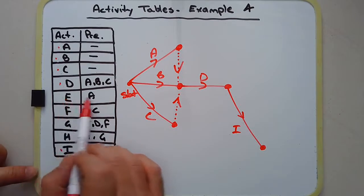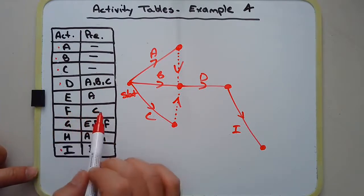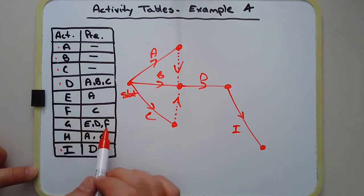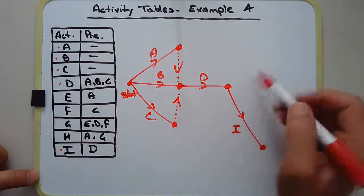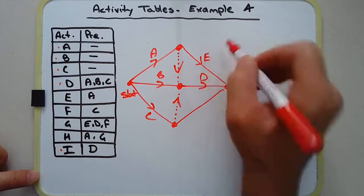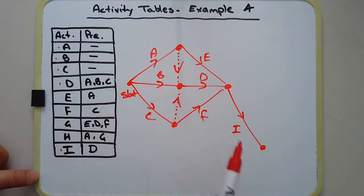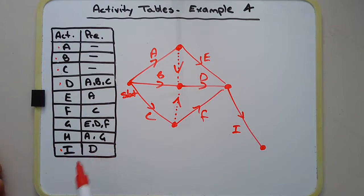Activity E is drawn from the end of activity A, and activity F is drawn from the end of activity C. But activity G is drawn from the end of E, D, and F. So E and F are included here. However, we have a bit of a problem: looking at this diagram, it looks like activity I depends on E, D, and F — but I only depends on D.